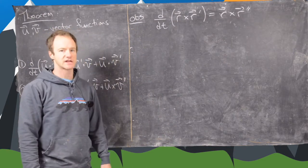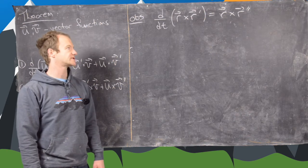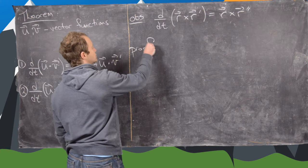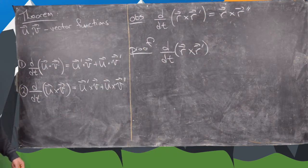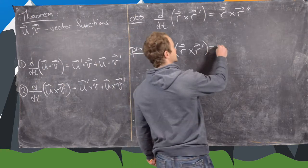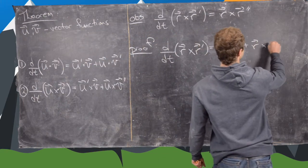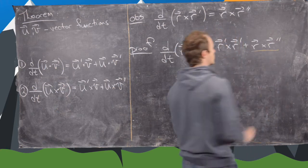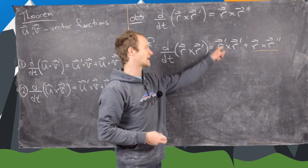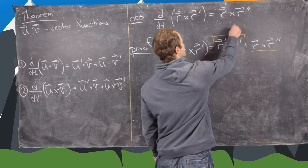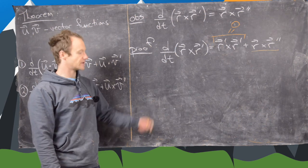The next observation involves the cross product. We want to show that the derivative of r cross r prime equals r cross r double prime. Using the product rule for cross products we just proved, the derivative of r cross r prime equals r prime cross r prime plus r cross r double prime. We've already got the r cross r double prime term, and the extra term r prime cross r prime is a vector crossed with itself — which is always zero. So that gives us the identity immediately.